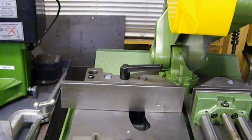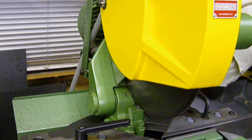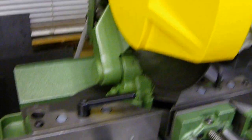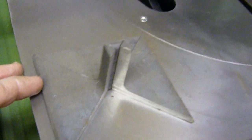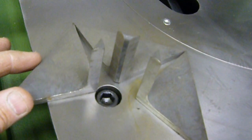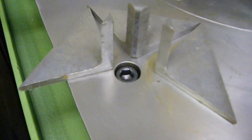So a cold saw, as you know, runs at extremely low RPM. On the table here I have some of the angle iron that was cut for that stand that I just showed you.